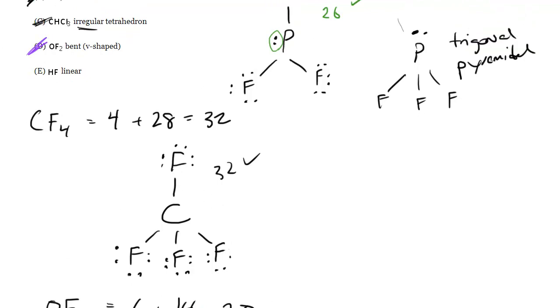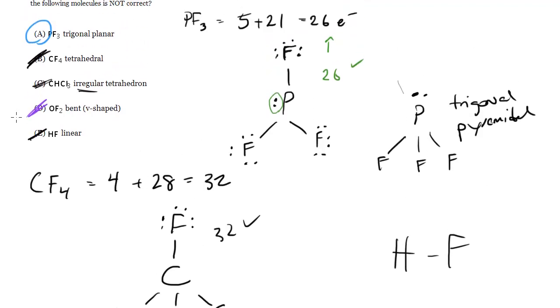HF is linear. I'm not even going to draw that one. You know that it's two things. The only way they can be connected is in a linear fashion, so of course that's right. So the answer here is A.